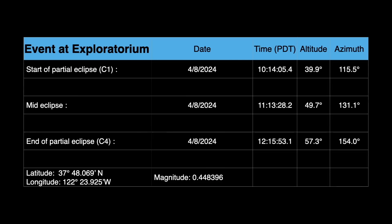For folks who stay at home and watch it from the Exploratorium, here are the timings for the partial eclipse visible there. Viewers will see a maximum magnitude 0.44 partial eclipse.